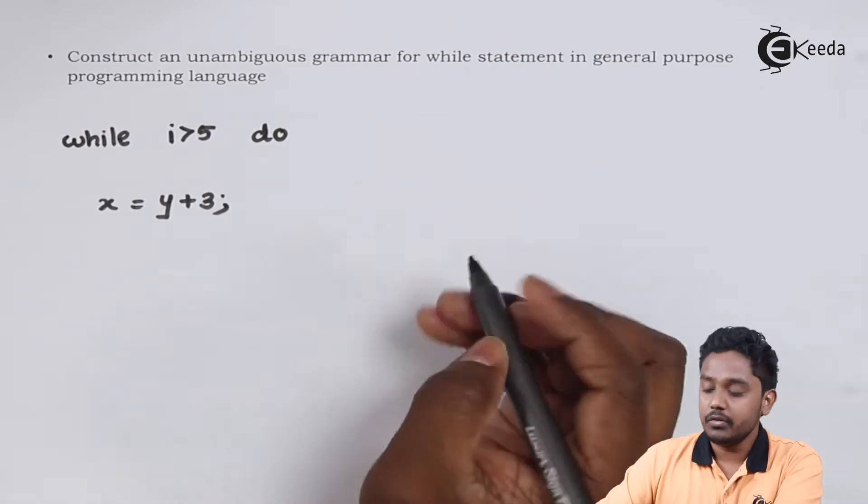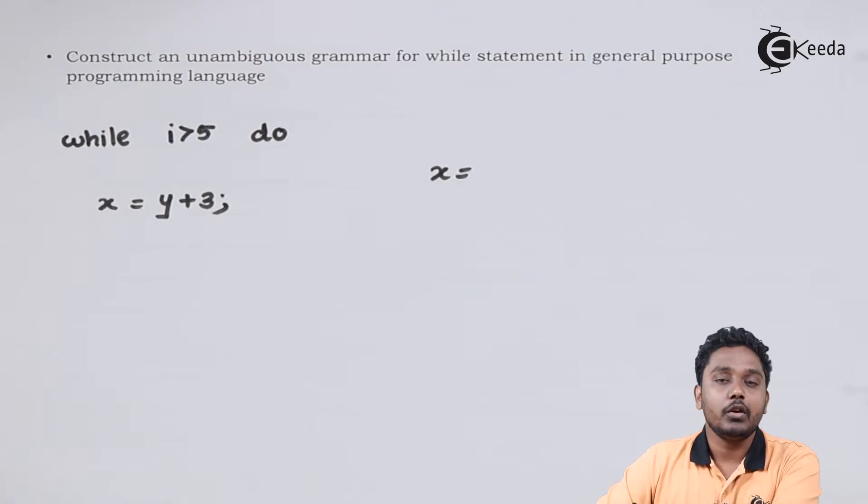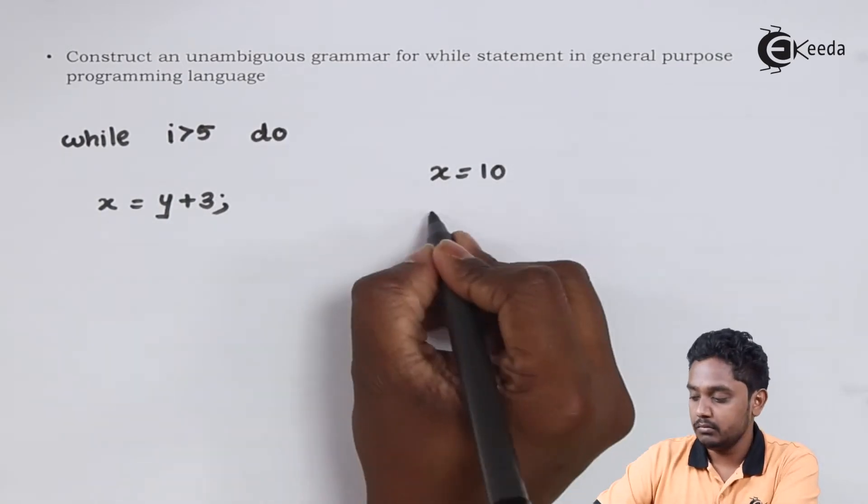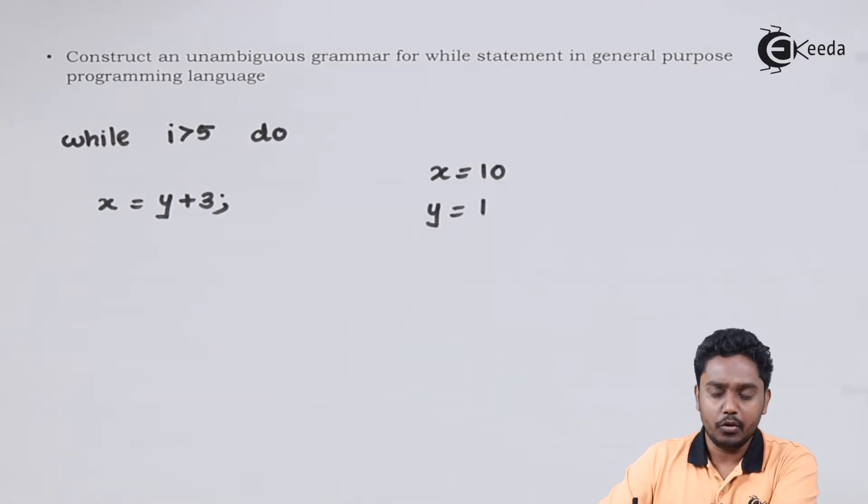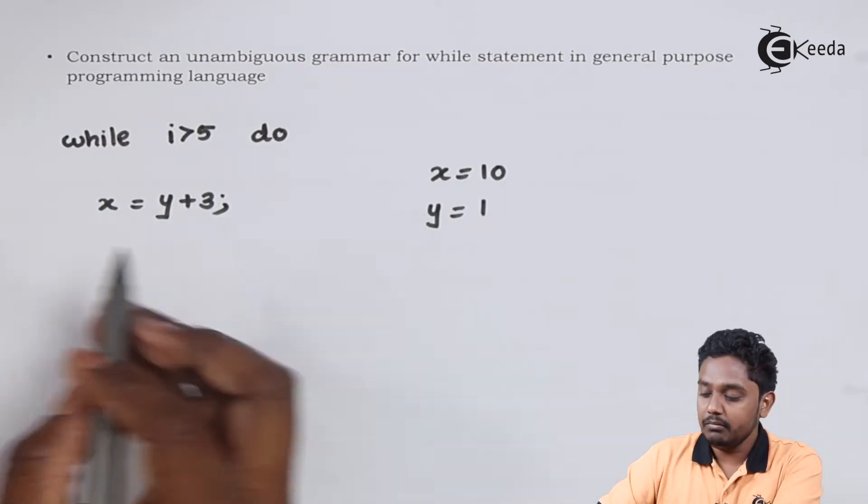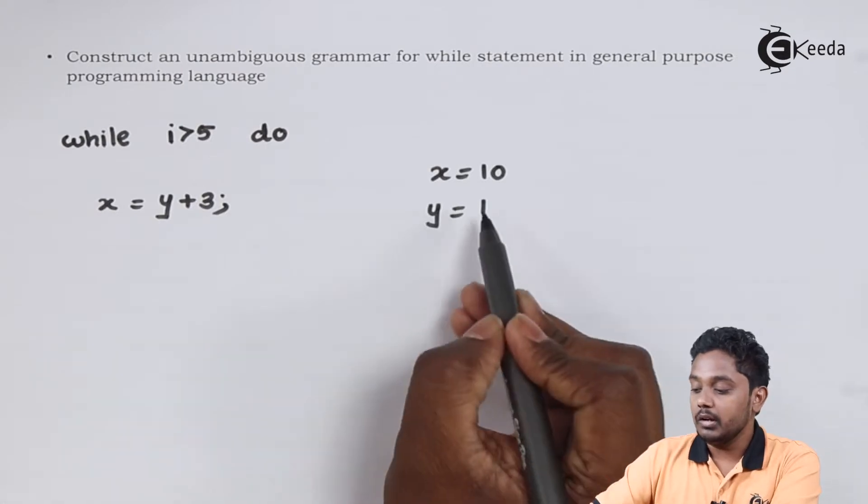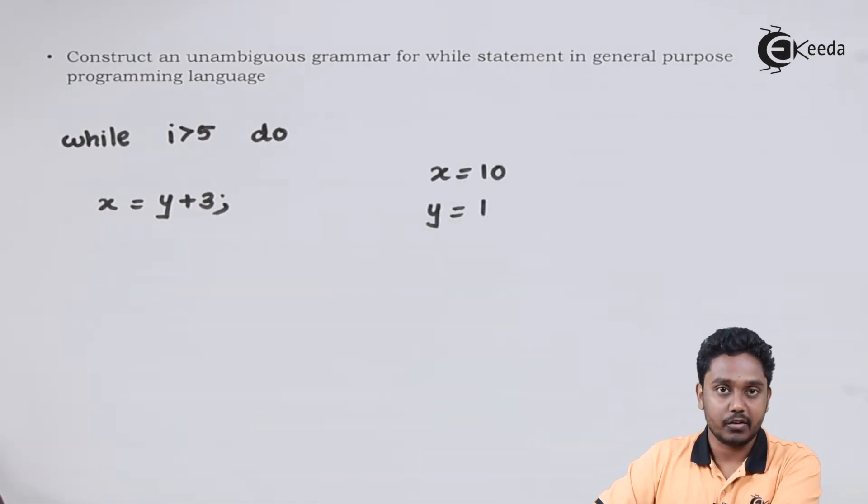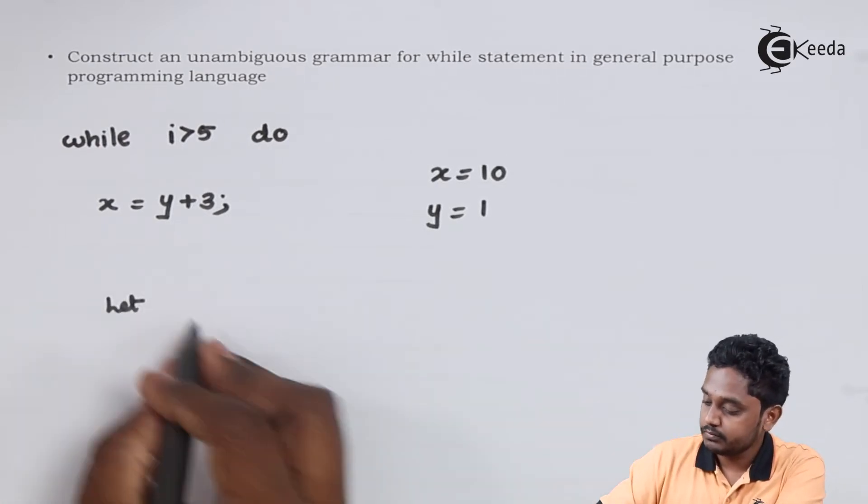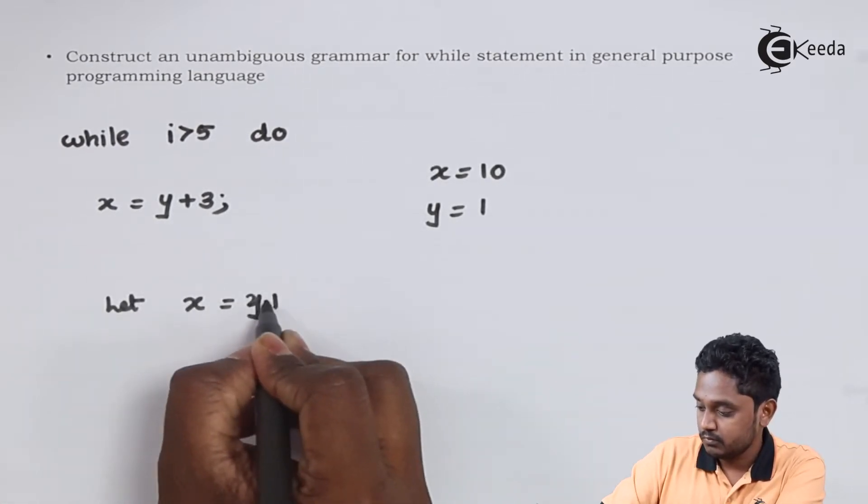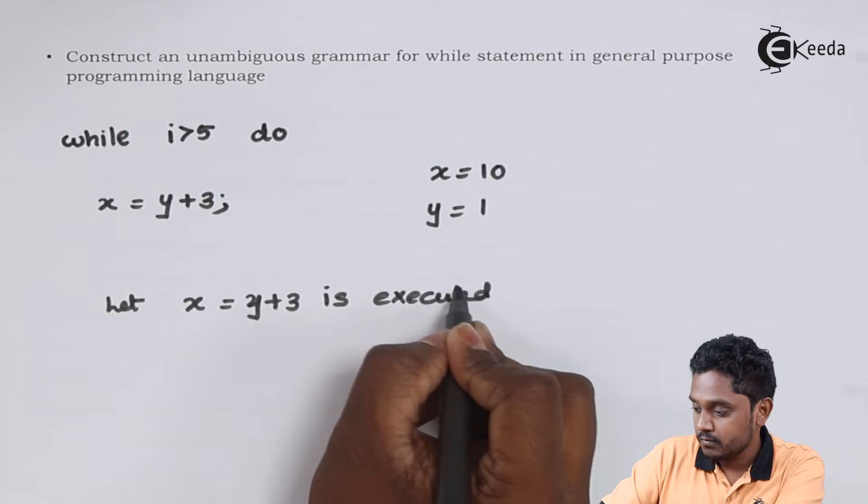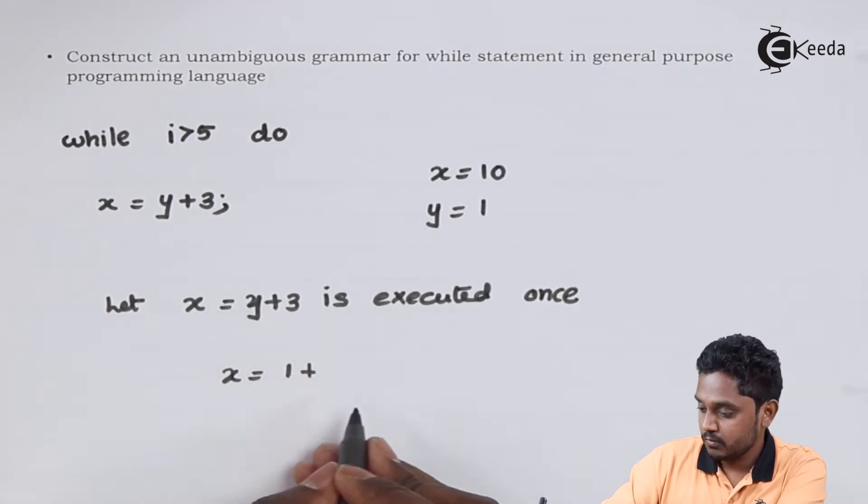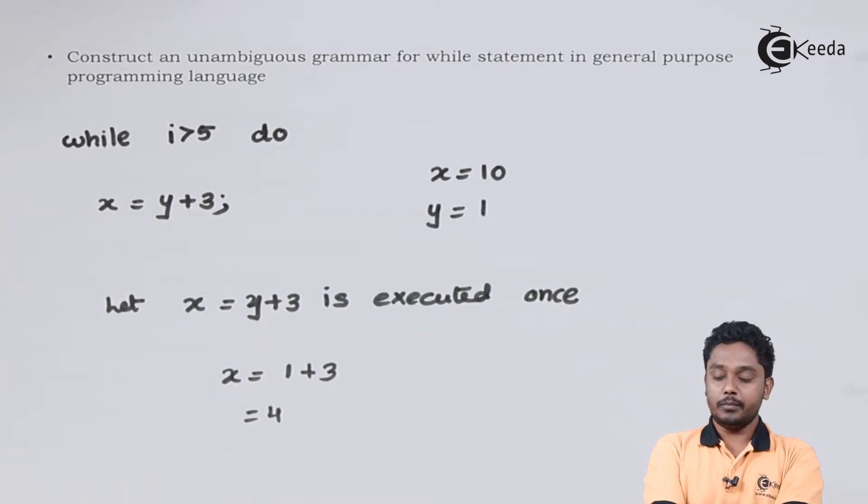Let us take some values. x is equal to let us say 10, y is equal to 1, y plus 1 would be 4. Each time the loop is executed the value of x would be incremented by 4. Let us say once it is executed, the value of x would be 4.